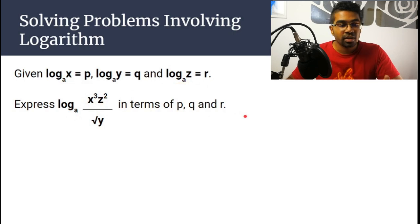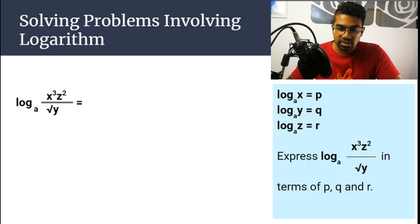Now this is a typical question. First thing we need to do is arrange the information that's given to us. So at the side here you can see log_a(x) = p, log_a(y) = q, and log_a(z) = r. This is our question. So now it's time to apply the first rule.